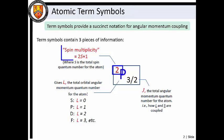The superscript gives the spin multiplicity, which is equal to 2s plus 1, where s is the total spin angular momentum quantum number.